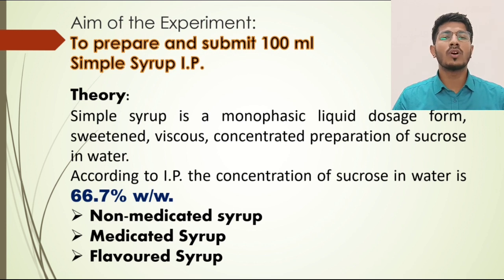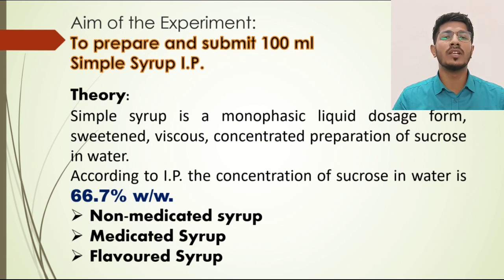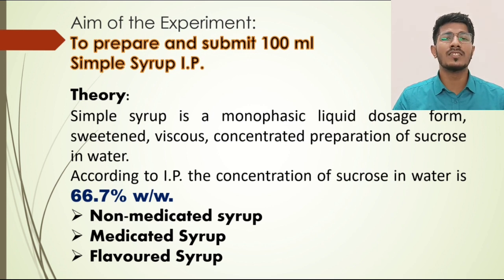Against that, if we talk about biphasic — for example, suspension, where we can see dispersed particles in a liquid. So that is biphasic. Or take the example of emulsion, where we can see two immiscible liquids, say oil and water. So that becomes biphasic. However, syrup is a monophasic liquid dosage form. It is sweet, it is viscous, it is concentrated because of the addition of a large amount of sucrose in water.